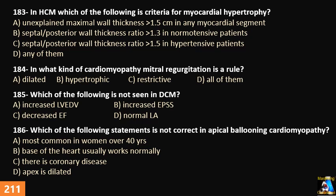Continuing Question 185 options: C) decreased ejection fraction, or D) normal LA. Question 186: Which of the following statements is NOT correct in apical ballooning cardiomyopathy? A) most commonly seen in women over 40 years old, B) the base of the heart usually works normally, C) there is no coronary disease — meaning no blockage or pathology in major branches — and the apex is dilated.